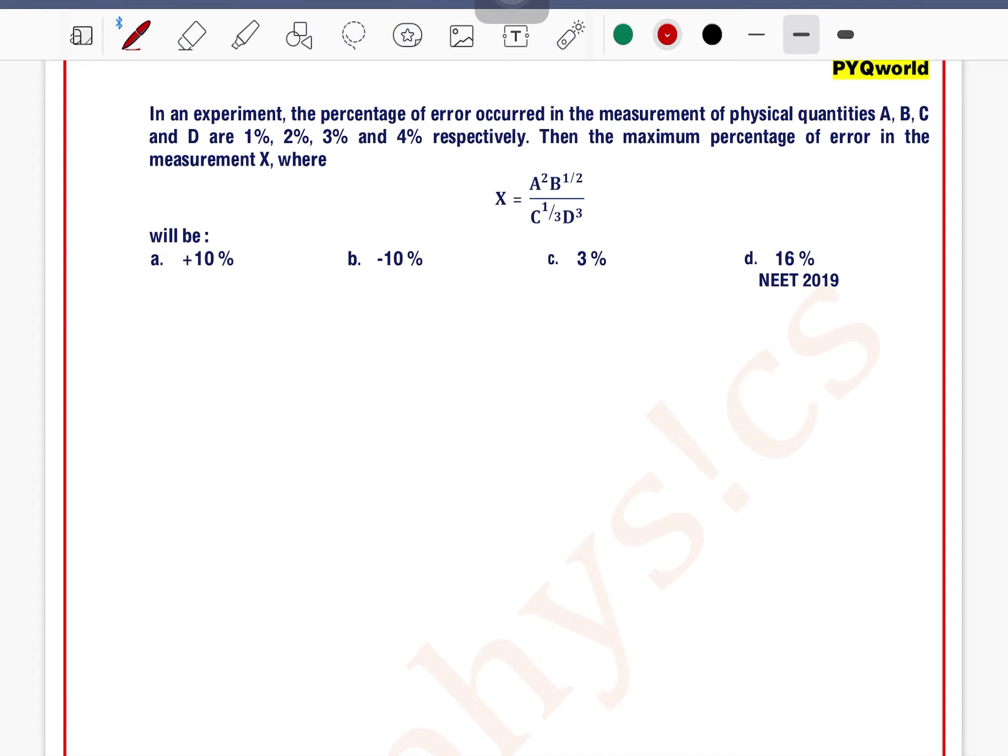Then the maximum percentage of error in the measurement X where X is equal to A square B to the power 1 by 2, C to the power 1 by 3 and D cube.